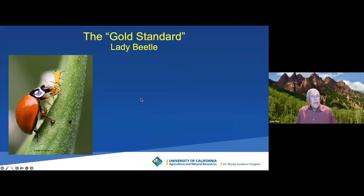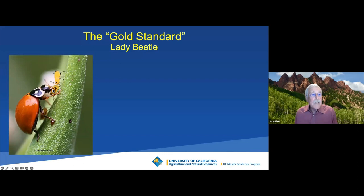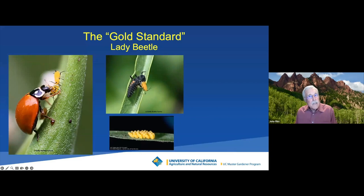The gold standard in terms of a beneficial insect is the lady beetle — what people still call ladybugs. They're not bugs, they're beetles. What is she doing? She's eating what I call the Cheetos of the insect world — aphids. She loves to eat them. She lays her eggs on the underside of plants, and they hatch into her larva. Most people don't know this, which is why you have to understand the life cycle of these insects. The immature forms are doing a lot of the work. Just last week at a farmer's market table, a gentleman was horrified — he said, my God, I've been squashing those! He didn't know they were good guys.